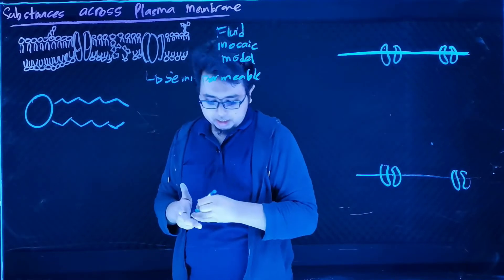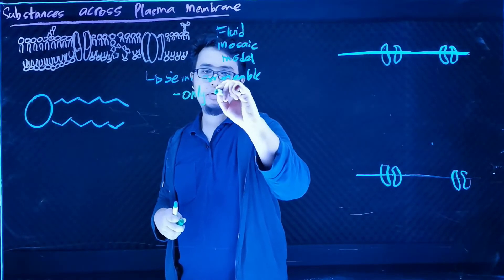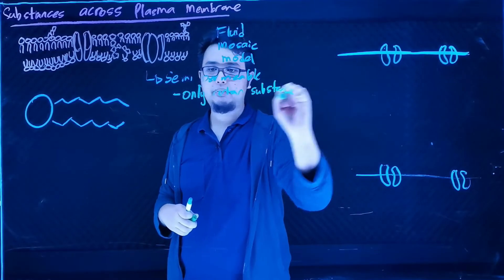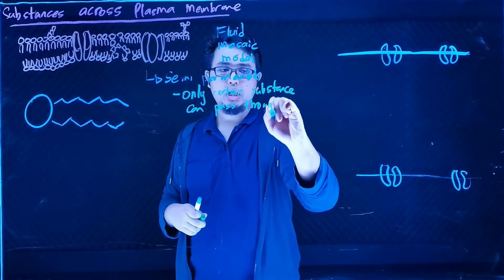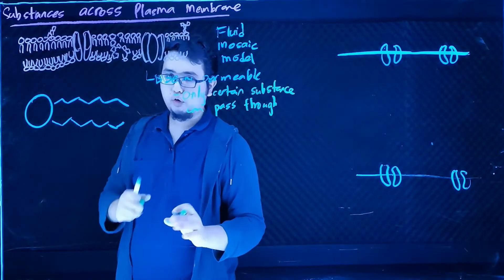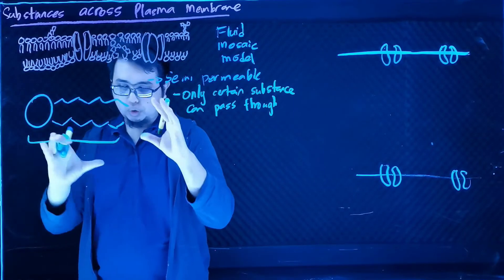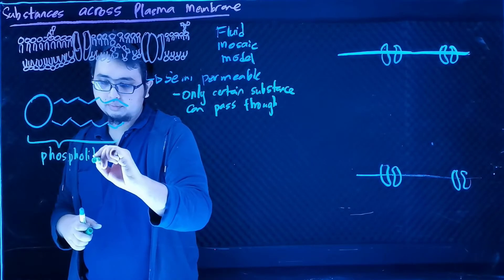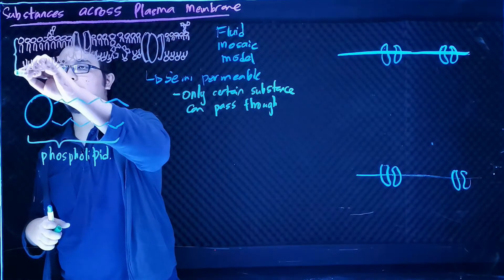Other substances cannot come through, so we say that the plasma membrane is semi-permeable, meaning only certain substances can pass through. The main component of our plasma membrane is actually the phospholipid bilayer, which consists of units of phospholipid.